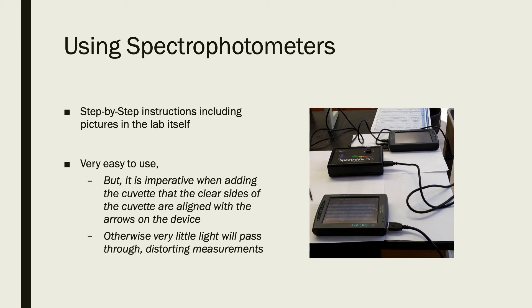The actual measurements themselves are pretty easy to make once the instruments are calibrated — you basically take the cuvette out, rinse it, put the new solution in, put it back in, get a new reading, and move on. This is especially straightforward for the calibration curve portion where you have a few different solutions to measure the absorbance of.